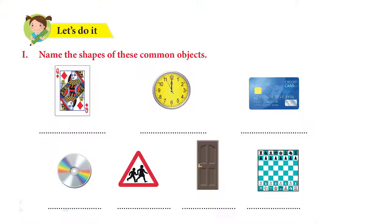Now let's look around our house and see if we can find things that look like these shapes. Let's look at the activity given in Unit 4, page 78. Here we have an activity that says 'Name the shapes of these common objects.' The first one is a playing card. What shape do you think it is? It is a rectangle. That's correct.